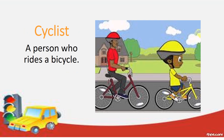What is a cyclist? A cyclist is a person who rides a bicycle. Watch how they are being safe on the road. The dad and the boy have a helmet on.